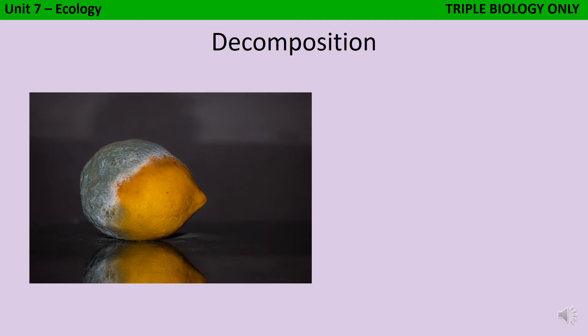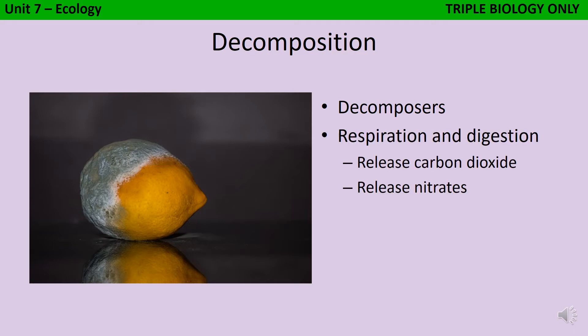Microorganisms, such as fungi and bacteria, play a vital role in agriculture by causing decomposition or decay. We call these microorganisms decomposers. As these decomposers break down organic matter, they respire, and in doing so they release carbon to the atmosphere in the form of carbon dioxide. They also digest other food molecules, such as proteins, so they release mineral ions like nitrates into the soil.